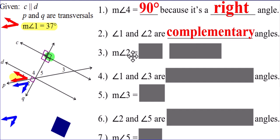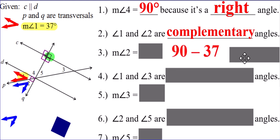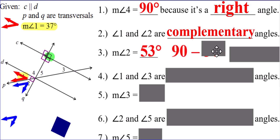What about the measure of angle two? I know the measure of angle one is 37 degrees. I now know that angle one and two together form 90 degrees, so I can therefore take the 90 degrees, subtract angle one's measure of 37 degrees, and that will give me the measure of angle two — which is 53 degrees.